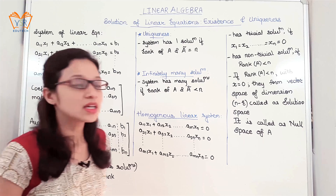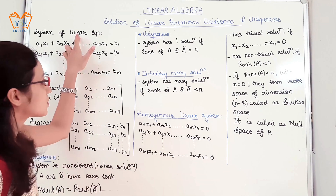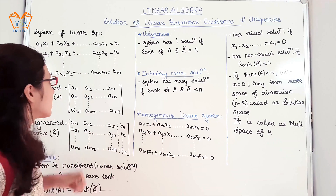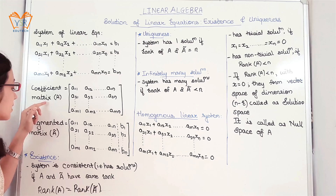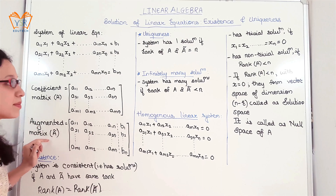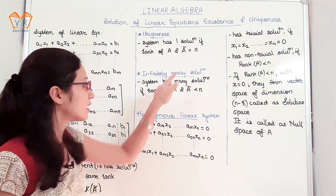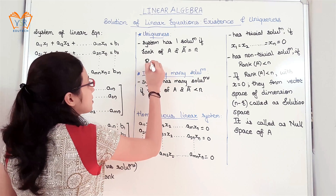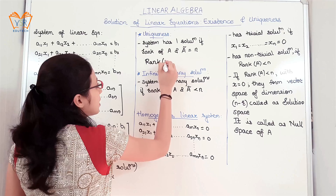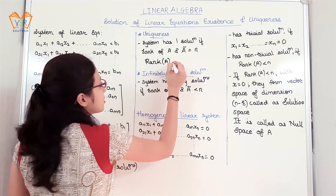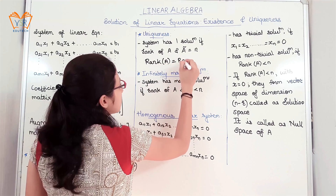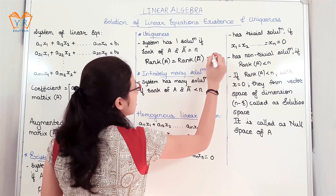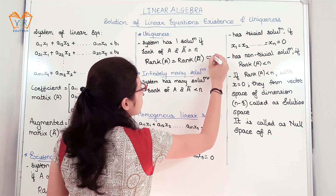Next, uniqueness: the system of linear equations has only one solution when the rank of the coefficient matrix and the rank of the augmented matrix are equal to n, where n is the number of unknowns. So we can write: rank of A equals rank of augmented matrix equals n.